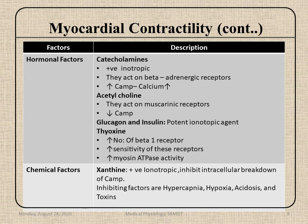Now hormonal factors: catecholamines, acetylcholine, glucagon, insulin, and thyroxine. Catecholamines are positive inotropic — positive inotropic means increasing myocardial contractility. Catecholamines act on beta-adrenergic receptors, increasing cAMP and calcium. Acetylcholine acts on muscarinic receptors and decreases cyclic AMP, thereby decreasing calcium. Both glucagon and insulin are potent inotropic agents. Thyroxine increases the number of beta-1 receptors, increasing receptor sensitivity, and myosin-ATPase activity will be greater.